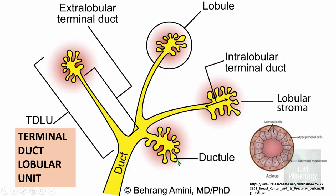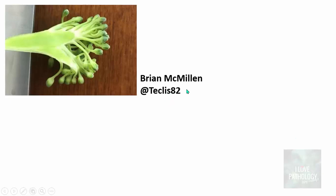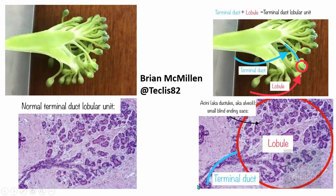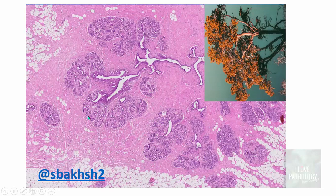Each ductule, also called an acinus, has two types of cells. One is the luminal cells, which are more or less columnar and are secretory cells. The other is abluminal — these are called myoepithelial cells. Both luminal and myoepithelial cells rest on a basement membrane. Another educator has explained this terminal duct lobular unit beautifully using an analogy of broccoli. Histologically, this part is the terminal duct, this is the extra lobular terminal duct, and this whole thing is the lobule — the entire component together is the terminal duct lobular unit.